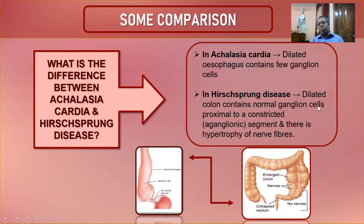In Hirschsprung's disease, the dilated colon contains normal ganglionic cells; the constricted aganglionic segment shows hypertrophied nerve fibers without ganglion cells. In achalasia cardia, the dilated esophageal segment has absent or reduced ganglion cells. This is the diagnostic difference.